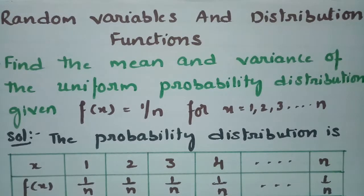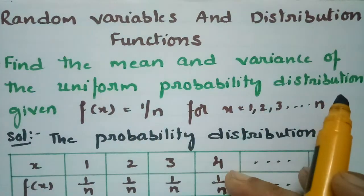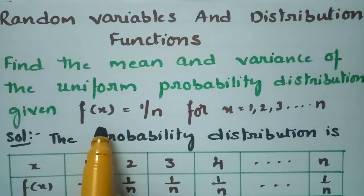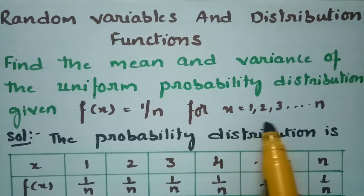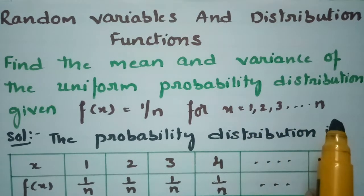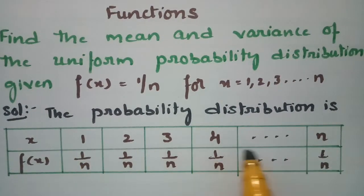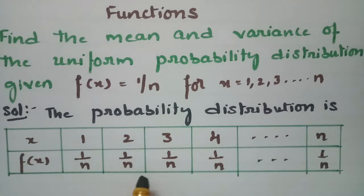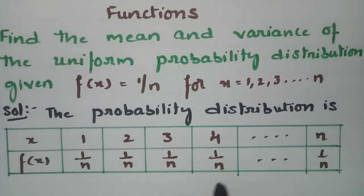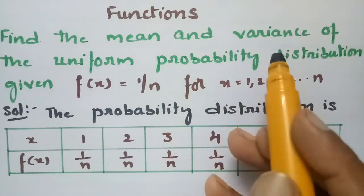This problem is from random variables and distribution functions. We have to find the mean and variance of the uniform probability distribution, given f(x) = 1/n for x values ranging from 1, 2, 3, and so on to n. The probability distribution assigns f(x) = 1/n for each of the x values 1, 2, 3, 4, 5, 6, and so on up to n.